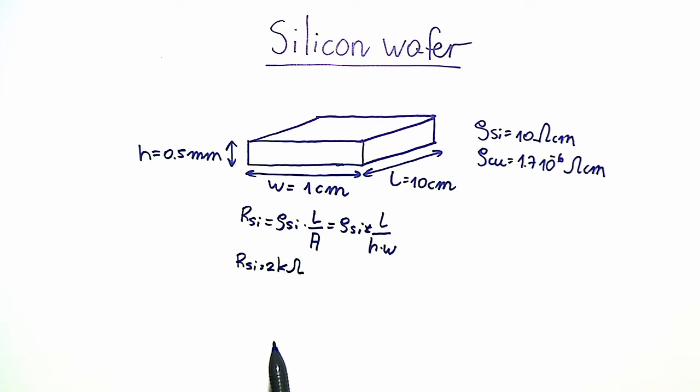Now, if we repeat the same calculation for a bar of copper of the same dimensions, we arrive at a different solution, namely the resistance of such a copper bar is 340 micro ohm.